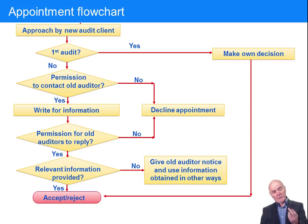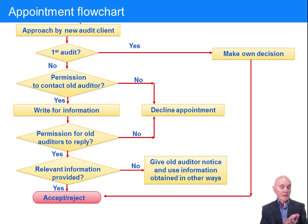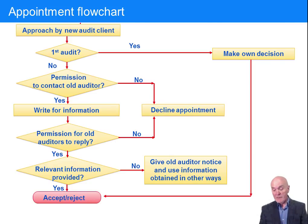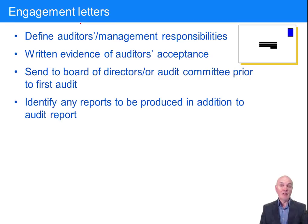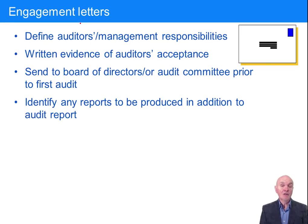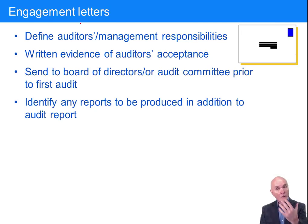So we've gone through the process — we've looked at whether or not we want to take on the client, and we've got no worrying signs from the outgoing auditor. The next thing we do is send out an engagement letter. The way to think about an engagement letter is that it essentially is a contract between the auditor and the client — what the auditor will do and what the auditor expects the client to do.